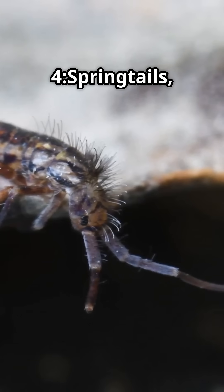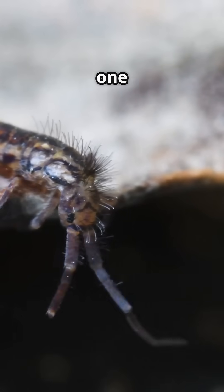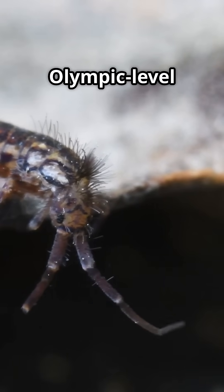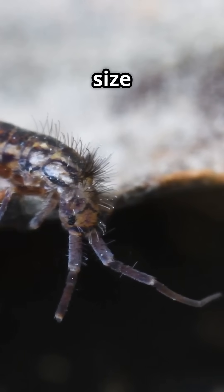Fact 4. Springtails, tiny insect-like critters, can jump 100 times their body length without wings. Olympic-level athletes, if they weren't the size of dust.